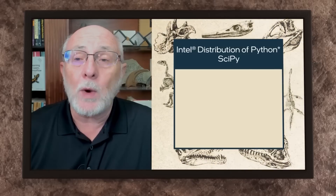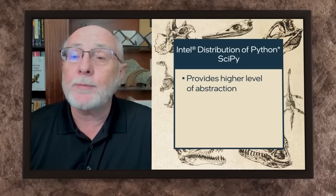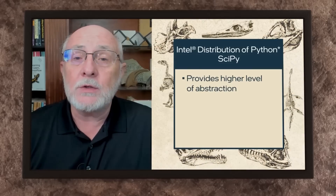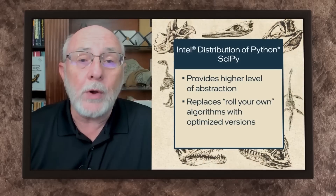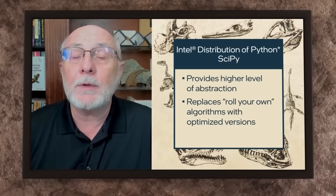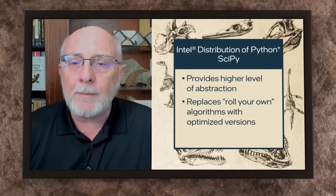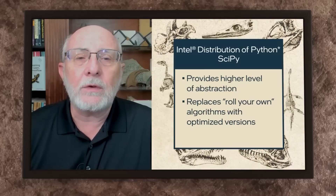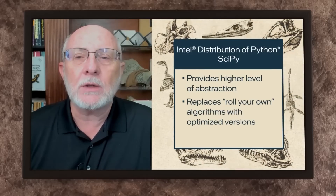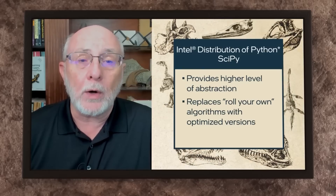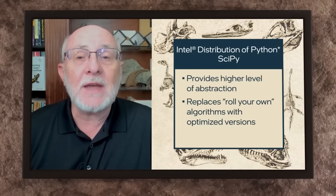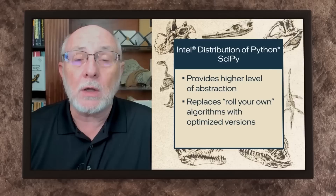SciPy is also based on NumPy, and there are vectorized versions of a wide variety of AI and science-related algorithms. SciPy provides a higher level of abstraction than NumPy, and it is used to replace roll-your-own algorithms with optimized versions. For example, creating a shortest-path atlas using straightforward triply-nested loops in Python is a couple of orders of magnitude slower than the SciPy-provided Floyd-Warshall algorithm.